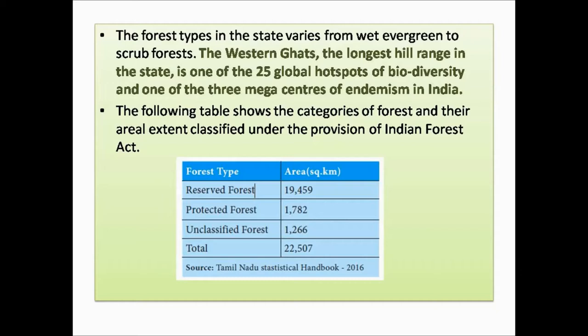Hotspots of biodiversity are regions that are biologically fertile — rich in the distribution of plants and animals — and at the same time highly endangered. The Western Ghats are also one of the three mega centers of endemism in India. Endemism means the animals or plants in that region live only in that particular location.